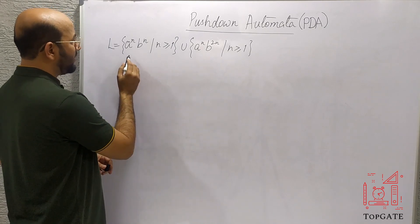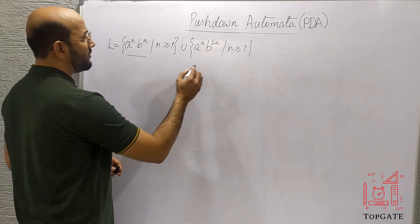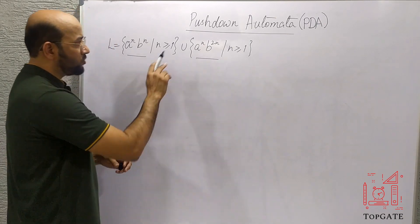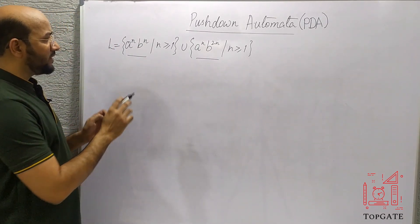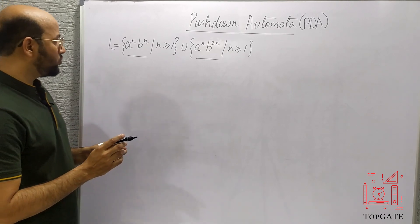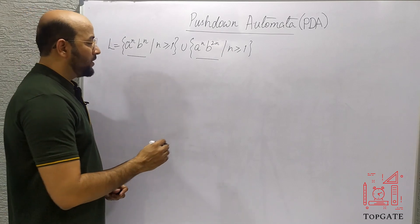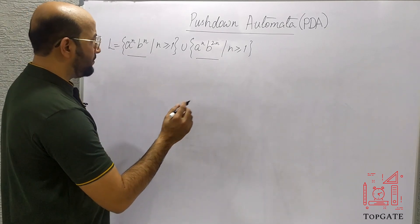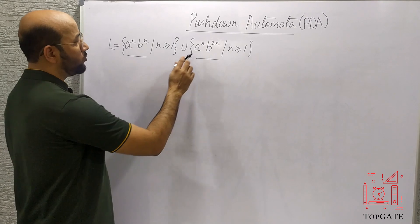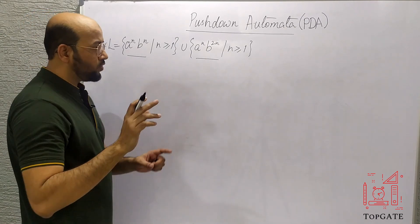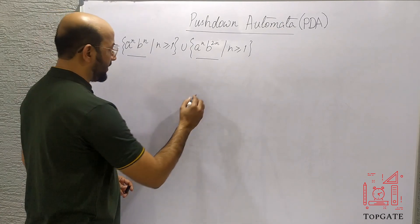We have already designed both of these PDAs separately. So we will design them again and then I will show you how to perform the union operation. First I will do for a^n b^n, then for a^n b^2n, and then show how to perform the union operation.